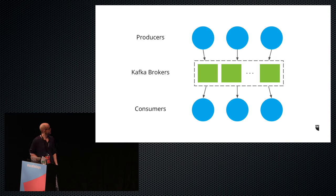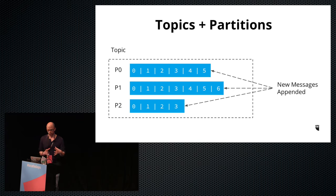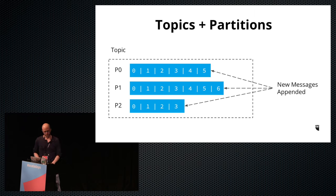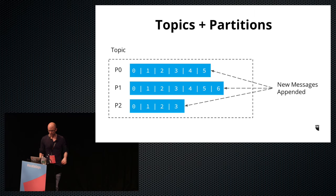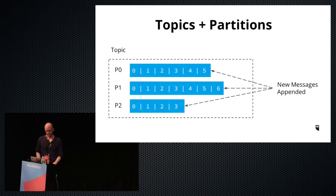A Kafka cluster maintains feeds of messages called topics. Entities that send messages into topics are called producers, and entities that read messages are called consumers. Kafka topics are a logical grouping of one or more individual commit logs called partitions — for example, a topic might have three partitions. Each partition is an ordered immutable sequence of messages, so if a topic has many partitions there's no total order across the topic, only an order per partition. Messages are continually appended to the end of the log, each with a numeric position called an offset. Messages are persisted for a configured retention period — typically around an hour to a week, with the Kafka default being two weeks.